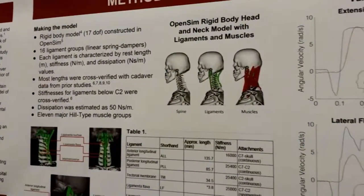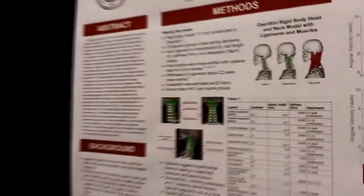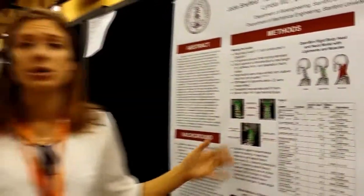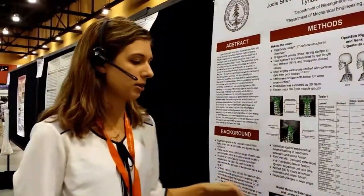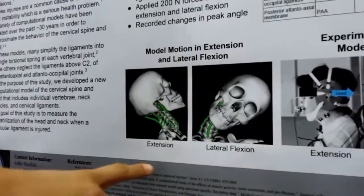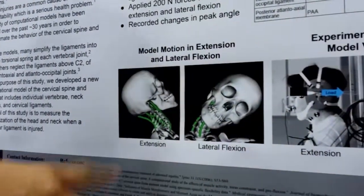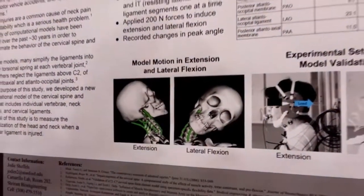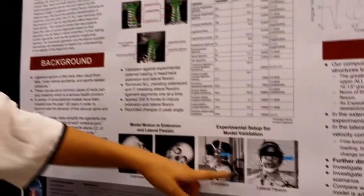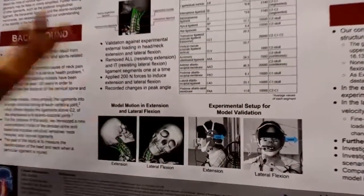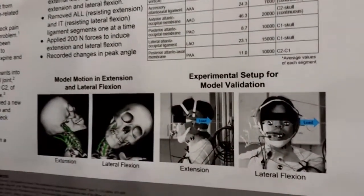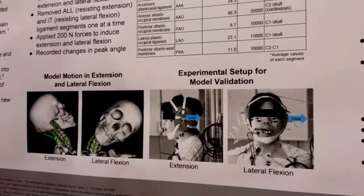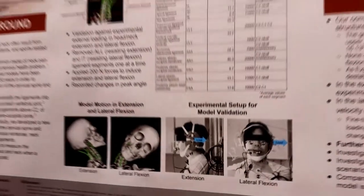What we did is applied loads in two different directions to cause lateral flexion and extension — extension where the head is snapping backwards, and this is lateral flexion. We validated the model against real experimental data using human subjects, with loads that are considered safe to a human subject. And the model is well validated — it appeared to track pretty closely as you can see here.